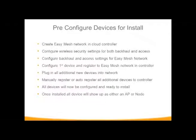To recap the basics: create the mesh network, create the security, decide what backhaul and access to use, configure your first device, then plug in all remaining devices and they'll be auto-configured after registration. Once all devices are configured, you're ready to install. They automatically detect whether they're an access point or a node. You can pre-configure everything in a lab environment — just plug each device in wherever you want during installation.